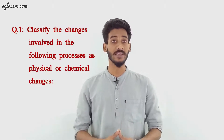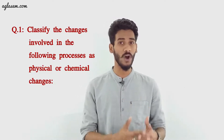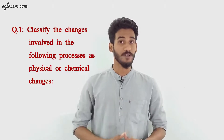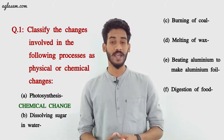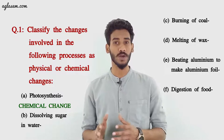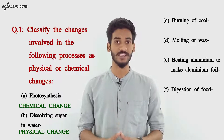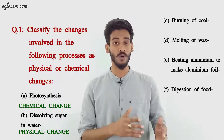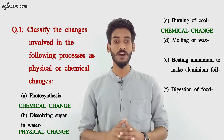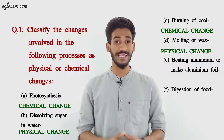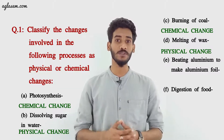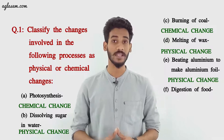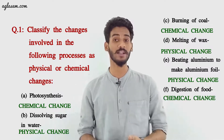Now let's discuss the solutions. Question 1: Classify the changes involved in the following processes as physical or chemical changes. A) Photosynthesis — chemical change. B) Dissolving sugar in water — physical change. C) Burning of coal — chemical change. D) Melting of wax — physical change. E) Beating aluminium to make aluminium foil — physical change. F) Digestion of food — chemical change.